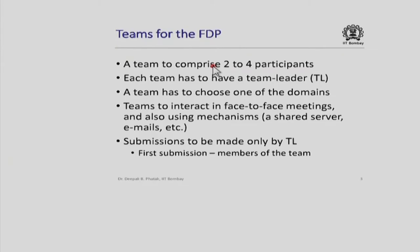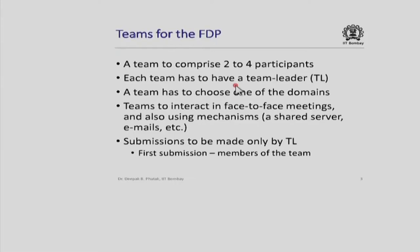Let me explain the composition of the team in more detail. Each team has to have a team leader — not imposed by the FDP or workshop coordinator, but chosen by the 2, 3, or 4 members from amongst themselves. Ideally, team members should be able to meet at least occasionally in person, though it is not compulsory that all belong to the same city or institution. Those from different cities can collaborate using asynchronous mechanisms such as emails.